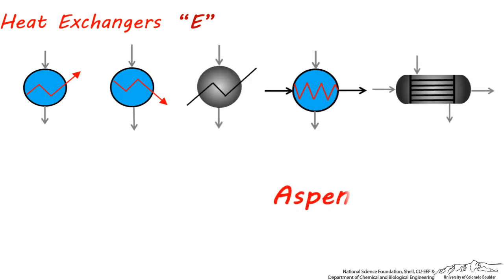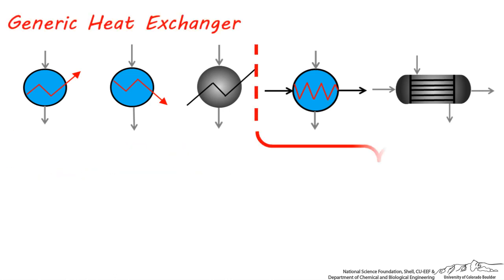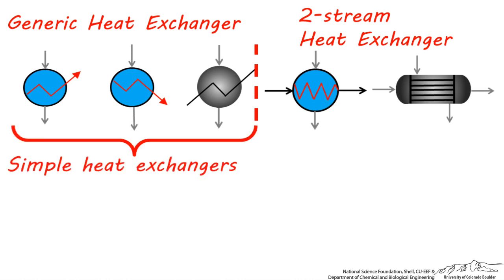Like ChemCAD, Aspen also has these two types of heat exchangers. One is a more general representation, and the other is a more rigorous two-stream heat exchanger. You might wonder how you can set up these heat exchangers so that they have a utility stream such as cooling water or steam going through them. Remember that these are simple heat exchangers. They're meant to be very fast and easy to set up in a process flow sheet.